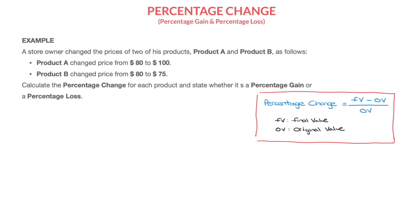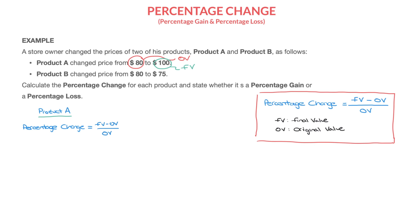I'll calculate the percentage change for Product A. Since Product A changed its price from $80 to $100, the $80 is the original value and the $100 is the final value. Using the formula, the percentage change for Product A equals the final value minus the original value divided by the original value — that's 100 minus 80, divided by 80.